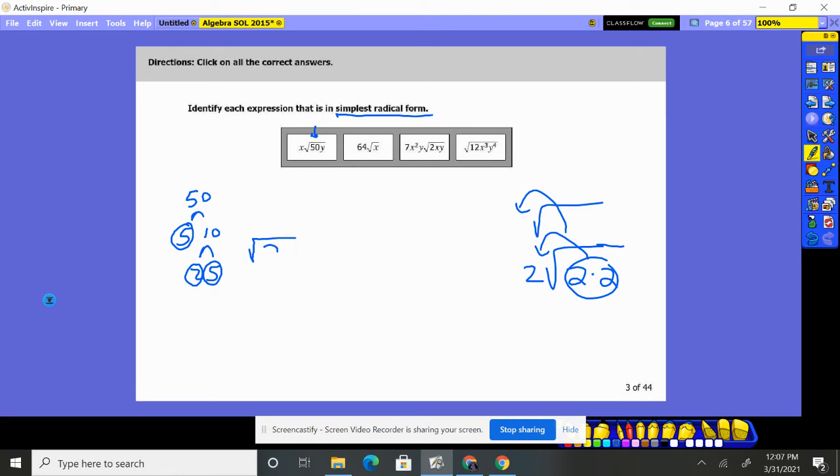So we know that has two times five times five, a pair of fives is coming out. That should simplify to five times that X and then what's left behind, the number two, will stay inside. So that is not in simplest radical form.